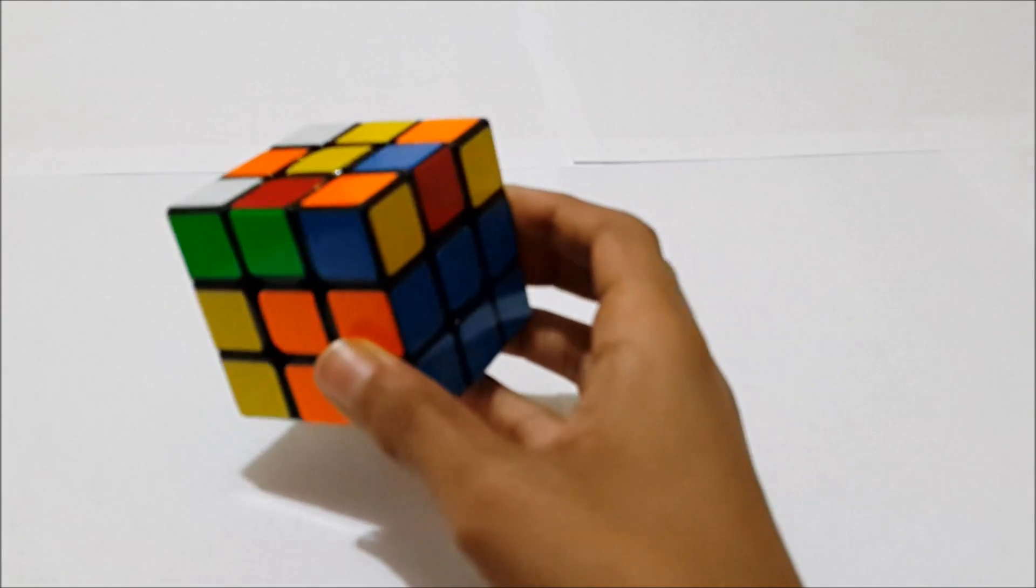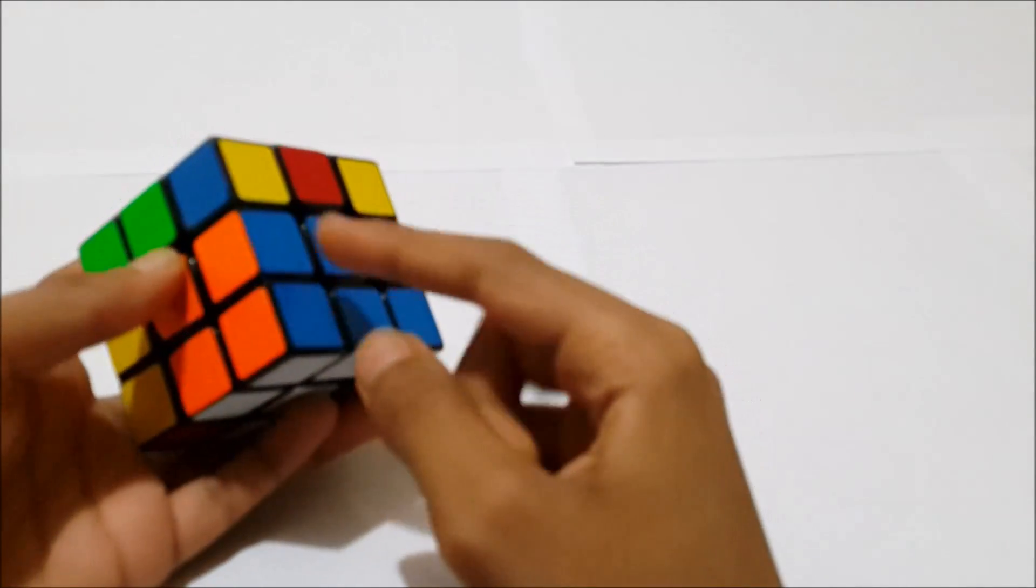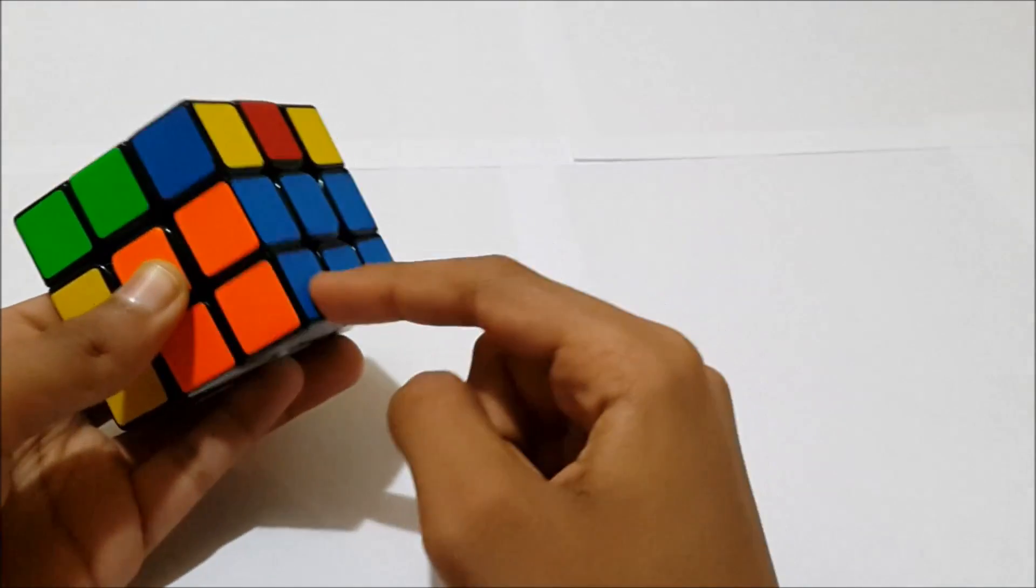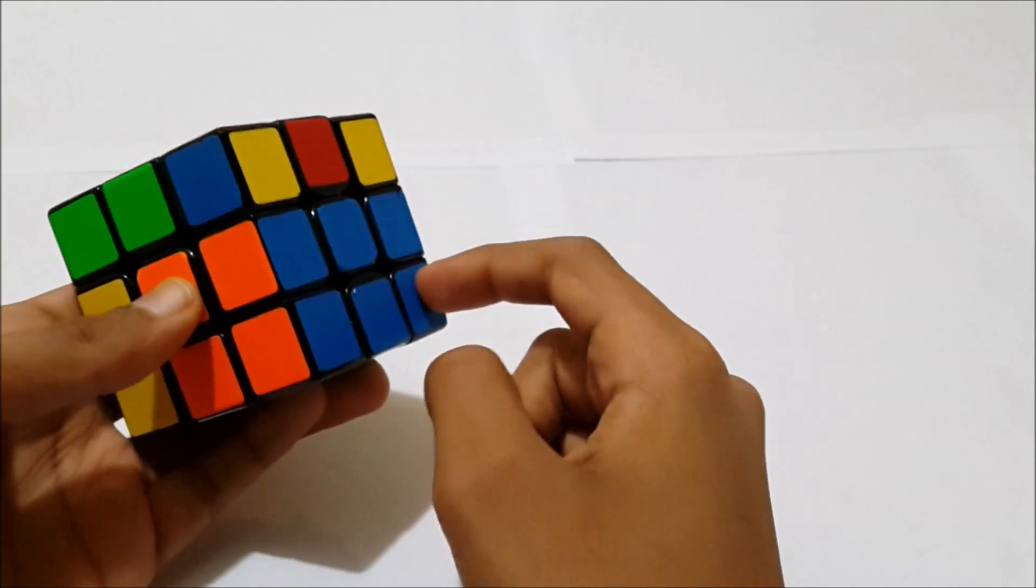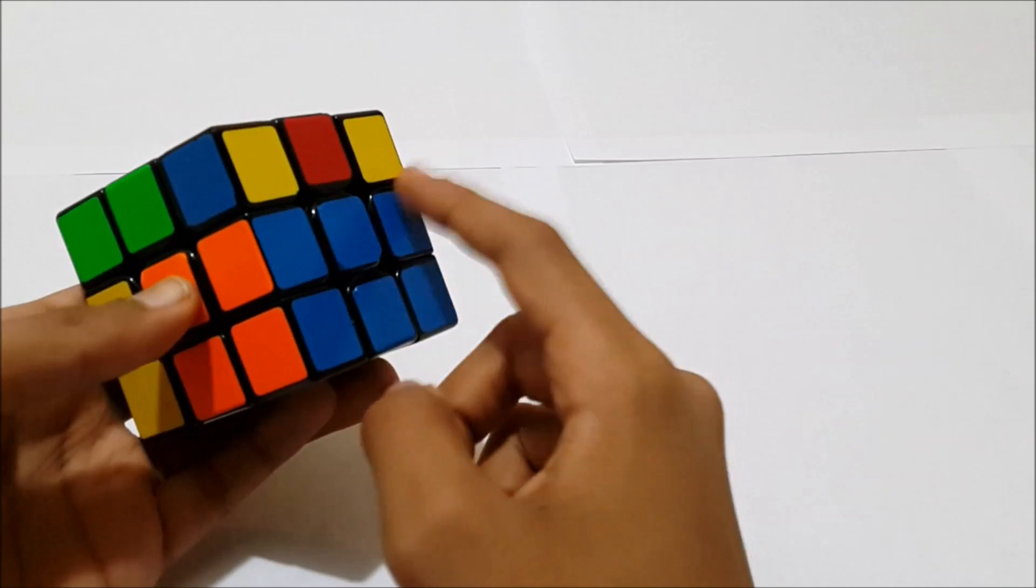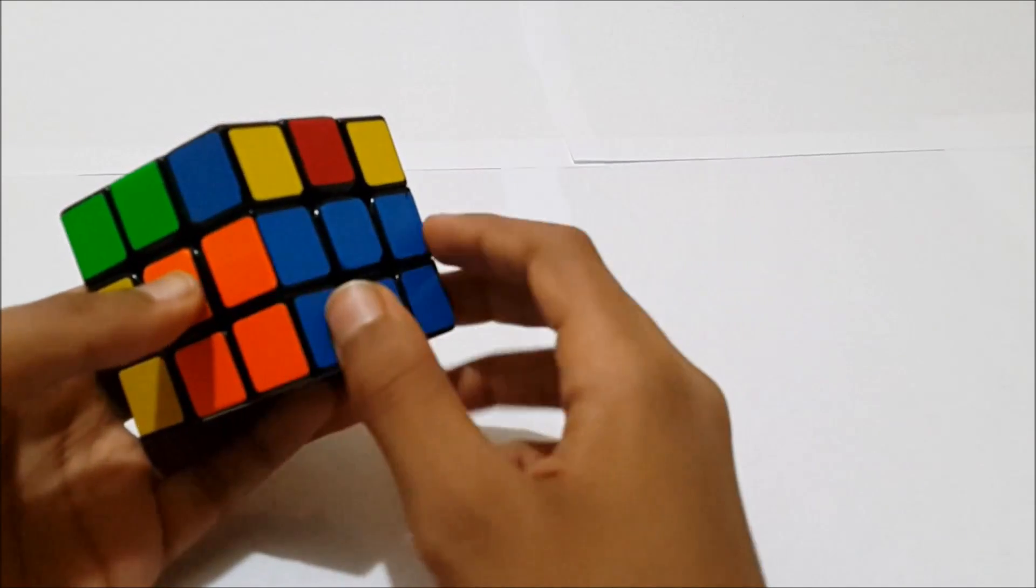Now one thing to note is that by doing any of these cases, if you're doing one where you have a corner here and an edge here, if you have a pair solved in the back, it's not going to work because it's going to mess up this pair, which is not something you want.